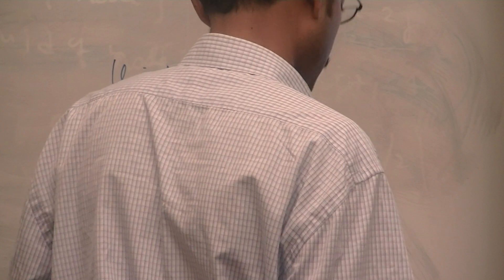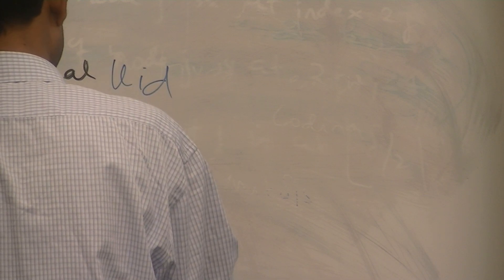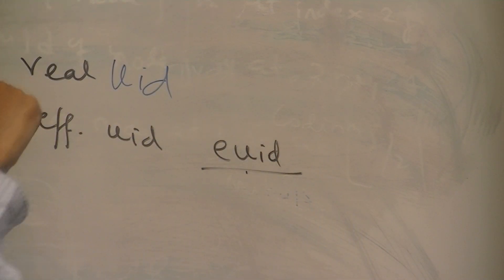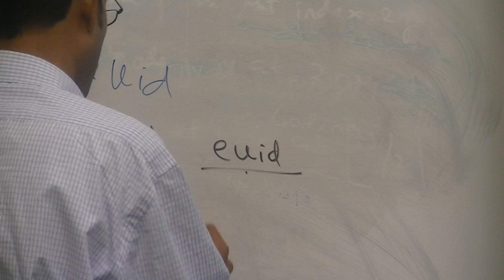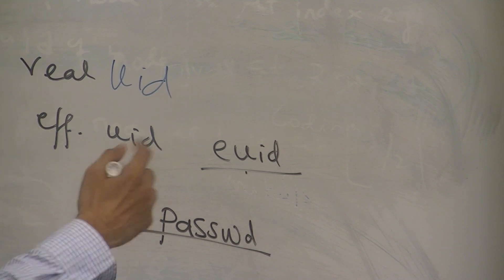In Unix, each process at any time has two IDs: what is called the UID, also called the real user ID, and the effective user ID called the EUID. You write a program as the developer or owner, but you may want your program to be run by several users. The program can be executed as a process by several users — same thing like a password program, which is developed by the administrator but any user can run it.